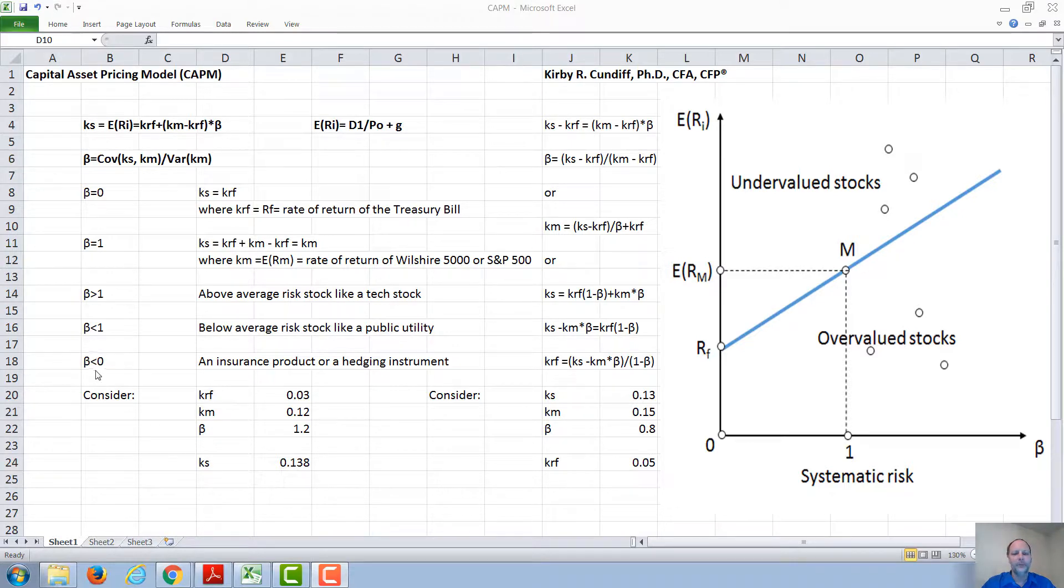It is possible to have a beta less than zero or a negative beta instrument. In some cases, oil or gold might be like this. When oil prices go up, stock prices go down. When gold prices go up, it's also possible stock prices might go down.